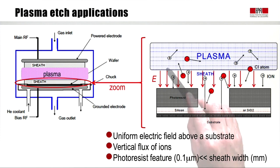The electric field in the plasma accelerates ions normally to the surface. The ions arrive perpendicular and go straight through the gaps in the photoresist down to the silicon substrate. To resume, we have a uniform electric field above a substrate, a vertical flux of ions. The photoresist feature here is of the order of fractions of a micron, which is much less than the sheath width. Therefore, the ions always arrive perpendicularly.